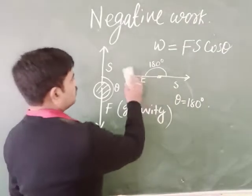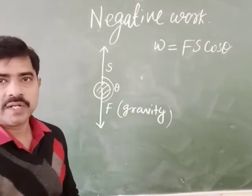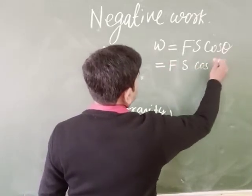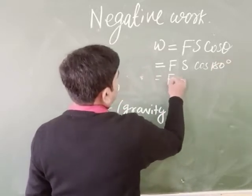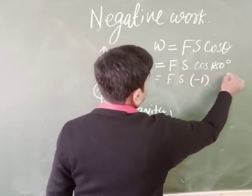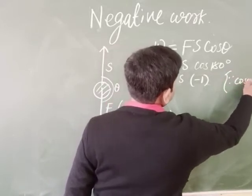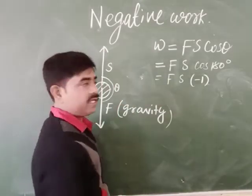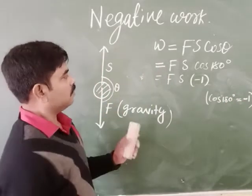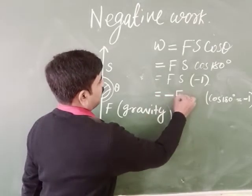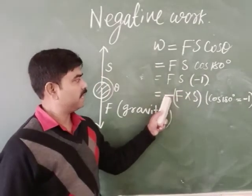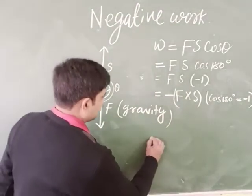Now let us apply this information. We know the angle between force and displacement is 180 degrees. Applying the expression w = fs·cos θ with theta equal to 180 degrees: cos 180° = −1. So w = f × s × (−1) = −fs. This is the expression for negative work done.